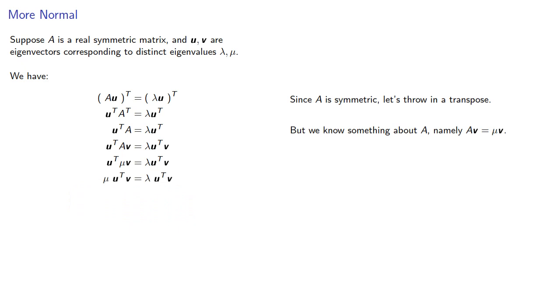Since u and v have real components, u transpose v is a one-by-one matrix whose entry is some real number C. So, now we have a scalar multiple of C equal to a scalar multiple of C. But since mu and lambda are different, the only way we can have this equality is that C must be the zero matrix.